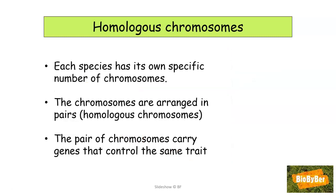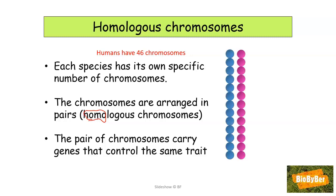Each species has its own specific number of chromosomes in each nucleus of their cells. Humans have 46 chromosomes in the nucleus of each cell. The chromosomes are arranged in pairs called homologous chromosomes — homo coming from the word meaning the same. Just like you might have 46 shoes in your wardrobe and will have 23 pairs, humans have 46 chromosomes arranged in 23 pairs. The chromosomes are arranged in pairs because each pair carries genes that control the same characteristic, hence the name homologous pair.